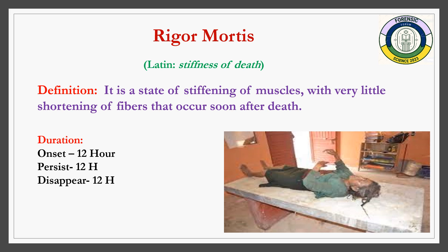Rigor mortis: 'rigor' is Latin for stiffness, and 'mortis' means death. It is the stiffness of the muscles of the dead body. It consists of three phases: primary relaxation, rigor mortis, and secondary relaxation. Rigor mortis appears in the entire body within 12 hours, persists for another 12 hours, and disappears in the next 12 hours — called the rule of 12. According to Nysten's law, it first appears in the orbicularis oculi (eyelid muscles) within three to five hours, then the jaw, facial muscles, neck, thorax, upper limbs, abdomen, and finally lower limbs from 9 to 11 hours after death.